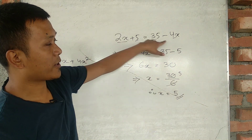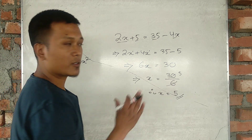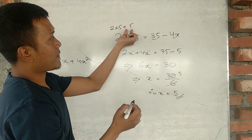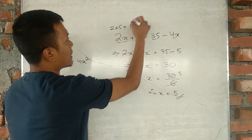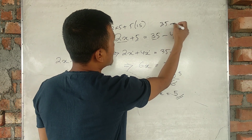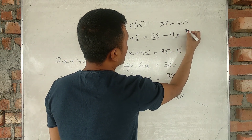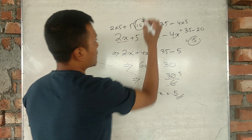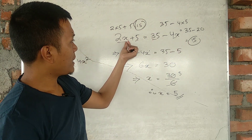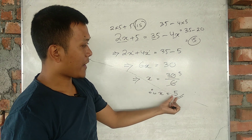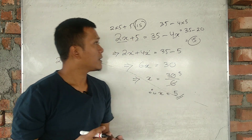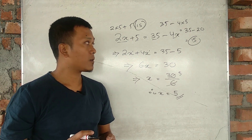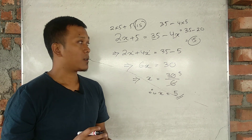Let us verify: substitute x equals 5 into the equation. Two into 5 plus 5 gives 10 plus 5 equals 15. And 35 minus 4 into 5 gives 35 minus 20 equals 15. Both sides equal 15, so the equation is balanced. The x value of 5 satisfies the equation. This was a simple example of transposition.